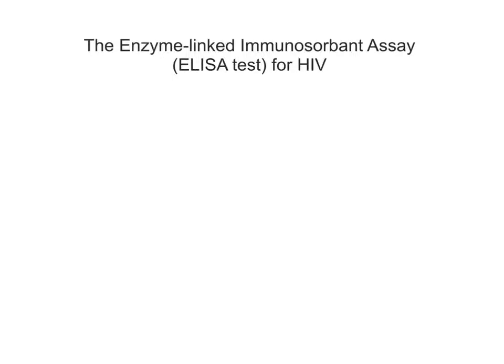The ELISA test measures samples that are very naturally low in concentration, so it can be used in things like drug testing — for example, if you're looking for banned substances. But in this video we're just going to talk about its use in detecting HIV. There are many different variations of the method, but I'm going to give the most straightforward one that matches with the AQA A-level syllabus.